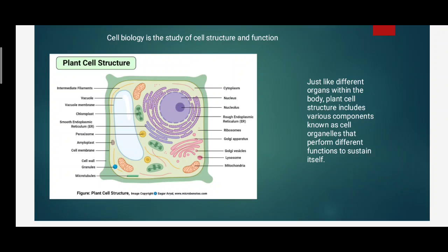Just like different organs within the body, the plant cell structure includes various components known as cell organelles, and they perform different functions to sustain life. Just as in our body there are different organs like heart, pancreas, and stomach, in the same way in plants there are different plant cells and in them there are different cell organelles.